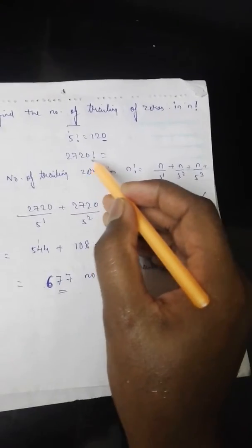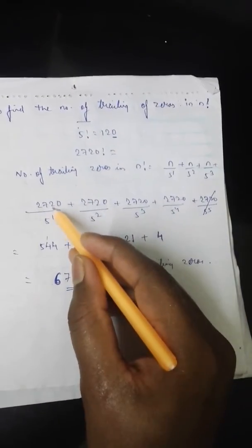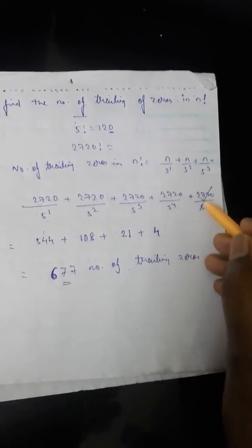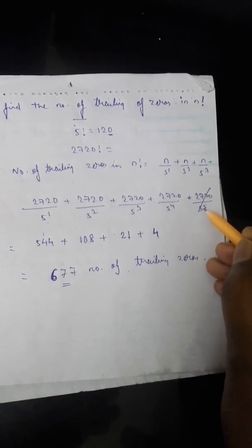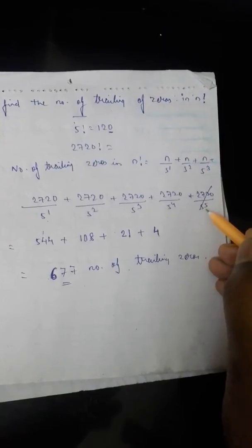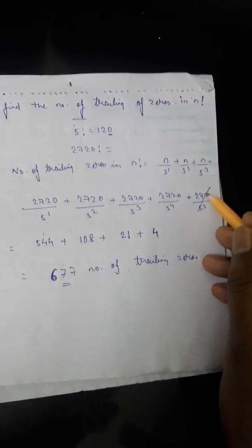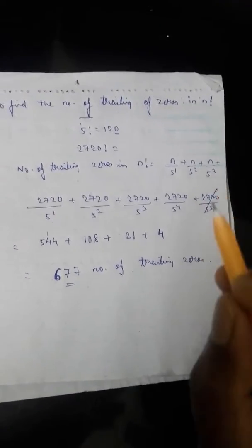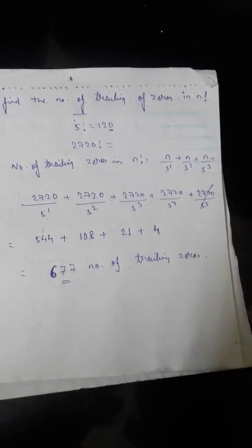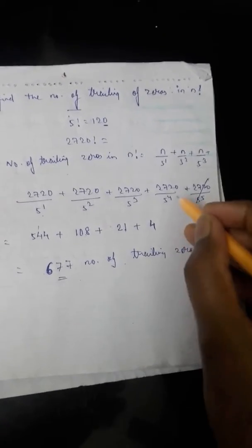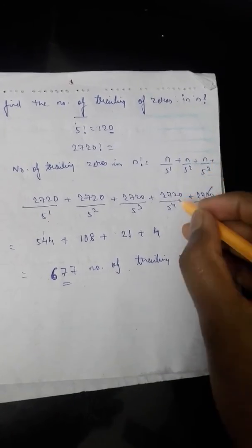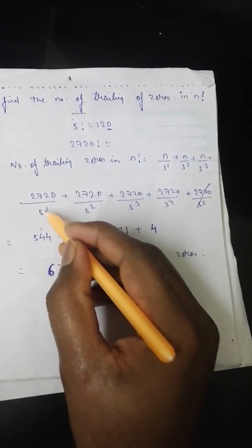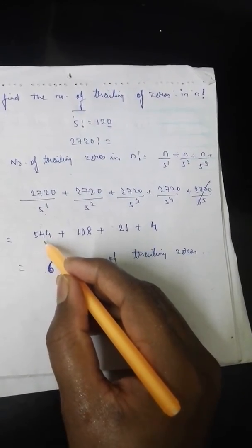For 2720 factorial, we divide 2720 by 5¹, then by 5², and continue. When we divide 2720 by 5⁵ (which is 3125), we get a quotient less than 1, so we discard that term and all subsequent ones. We only consider terms where the quotient is greater than 1.